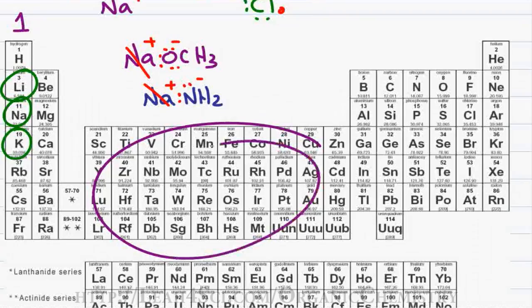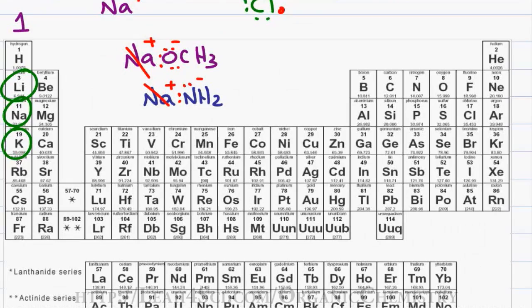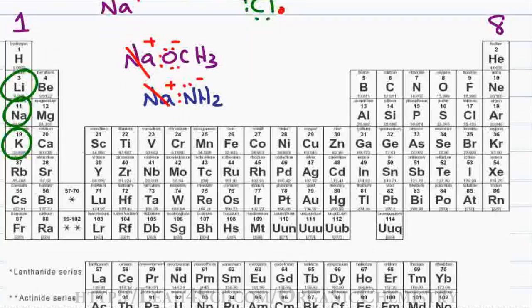Moving to the right of the table, for the most part, the elements in the middle of the periodic table don't show up as frequently in organic chemistry but if they do, since they are metals, they tend to be positive or partially positive. Moving to the right of the periodic table, we have group 8 which is the noble gases.